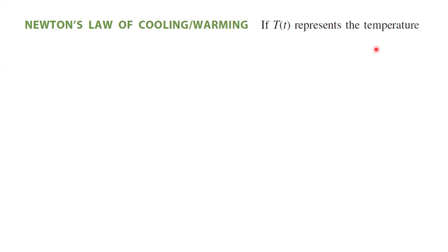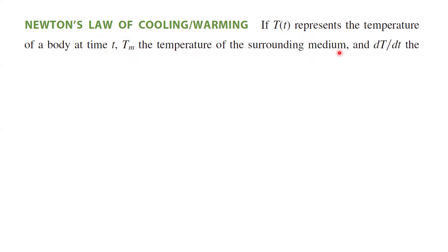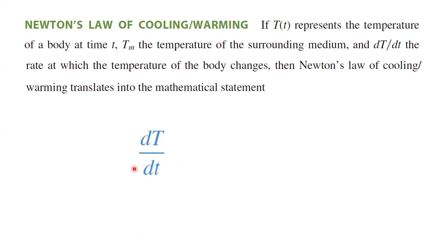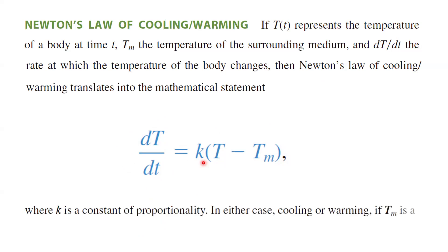On the application of differential equations, we are going to work on Newton's law of cooling and warming. If T of T represents the temperature of a body at time T, and T sub m is the temperature of the surrounding medium or the ambient temperature, then the rate of change of the temperature with respect to time, DT over DT, is proportional to the difference between the temperature of the body and the ambient temperature. K is called the constant of proportionality, and in solving differential equation problems, our goal is to identify what K is.